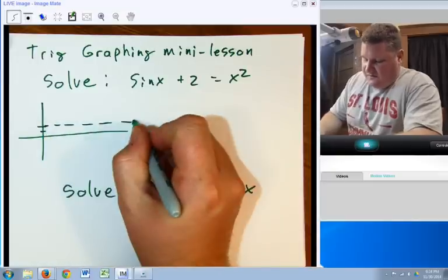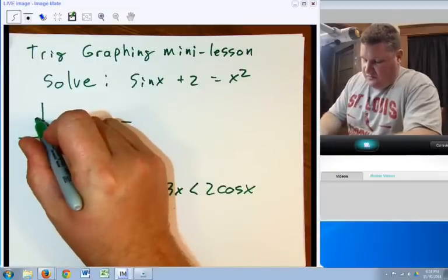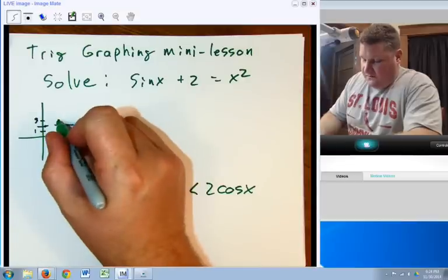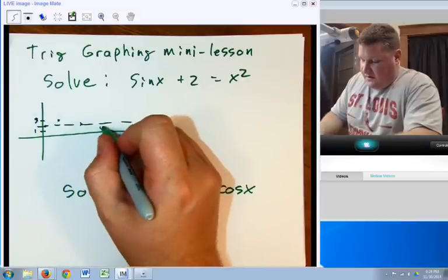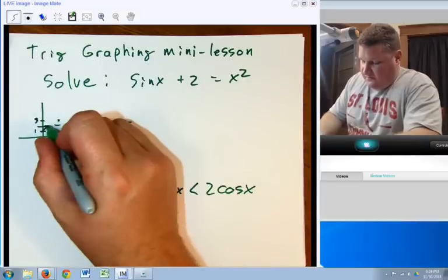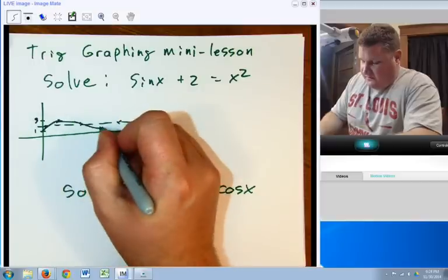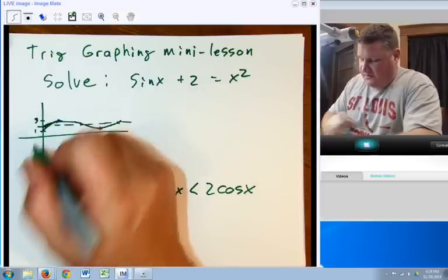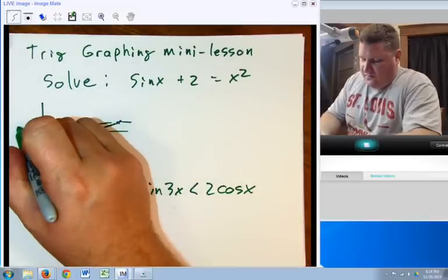It's going to go up to 3, down to 1. So top, middle, bottom, middle. So it's going to look something like this. Actually, it goes back to the middle there. And it's going to go back the other way as well.